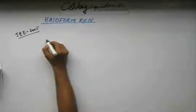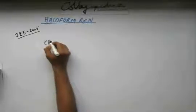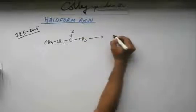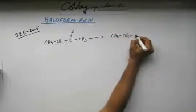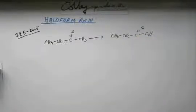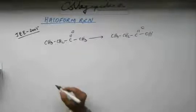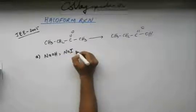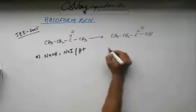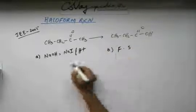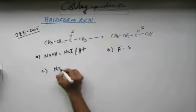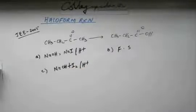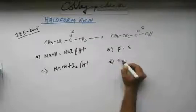Your options are: NaOH with NaI along with H+, Felling's solution, NaOH along with I2 and then we add H+, and your option D is Tollins reagent.